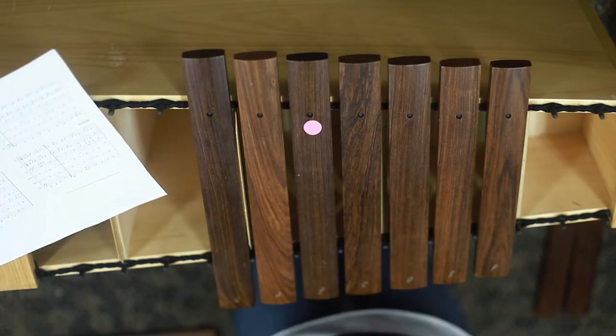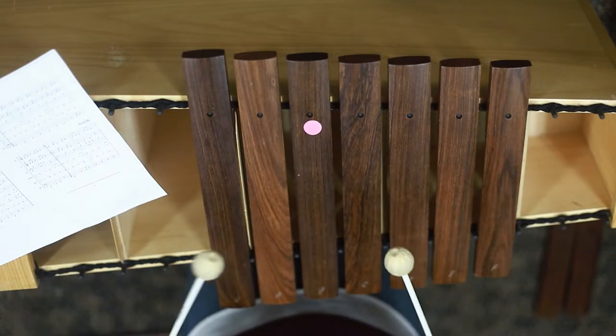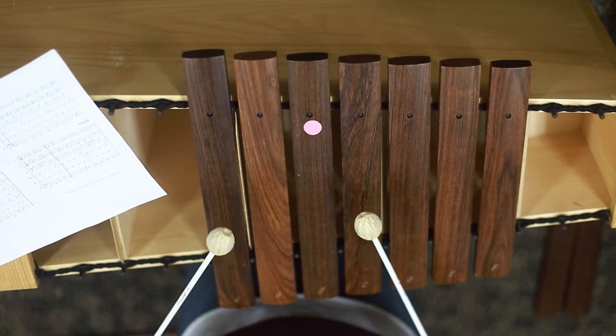So we're going to start with the A section, we're going to start with the C right here, and for the first bar, it's just C and G. It's going to go C, C, G, G, C.